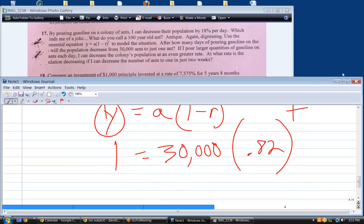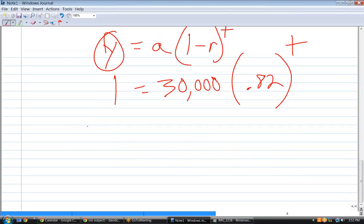What's my first step? Divide by 30,000. Okay. So now I have one over 30,000 equals .82 to the t. Next step? Take the natural log of both sides. Not sure it's quite fair to say plug in the natural log, but I guess that is what I'm doing. Okay.